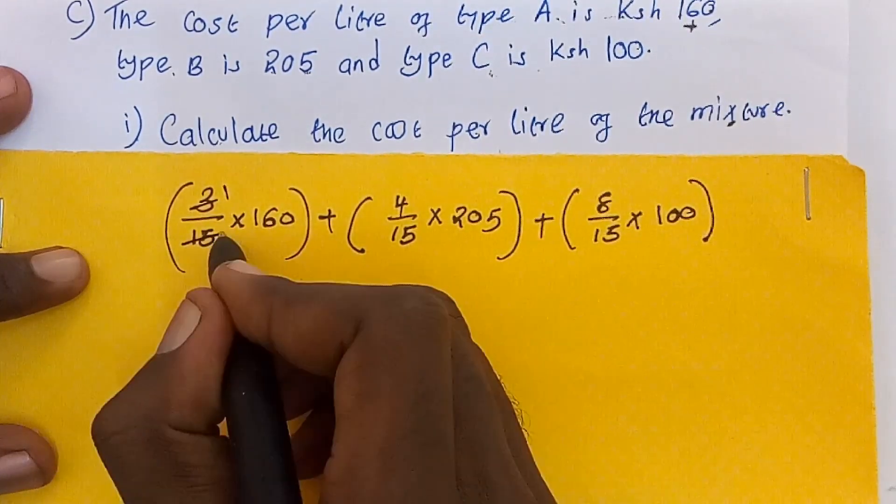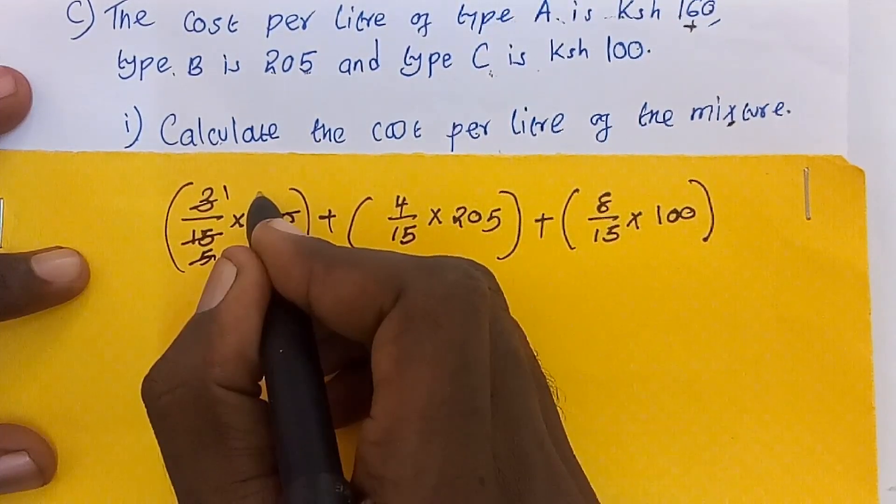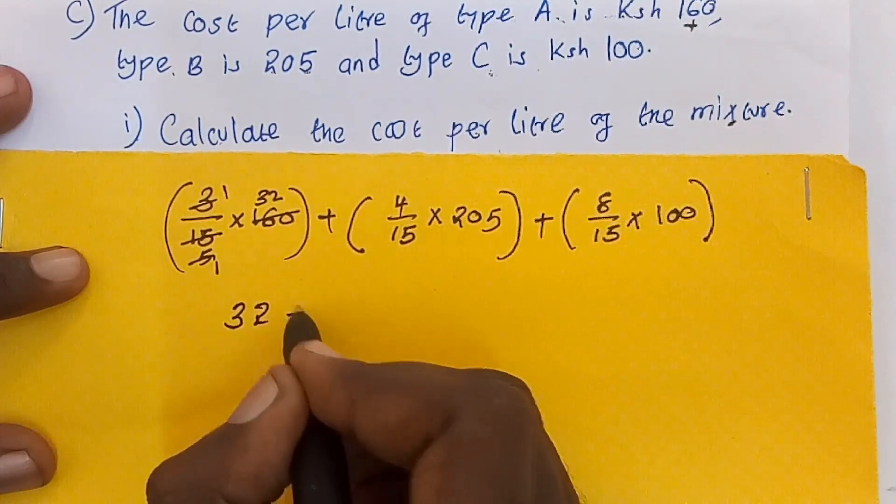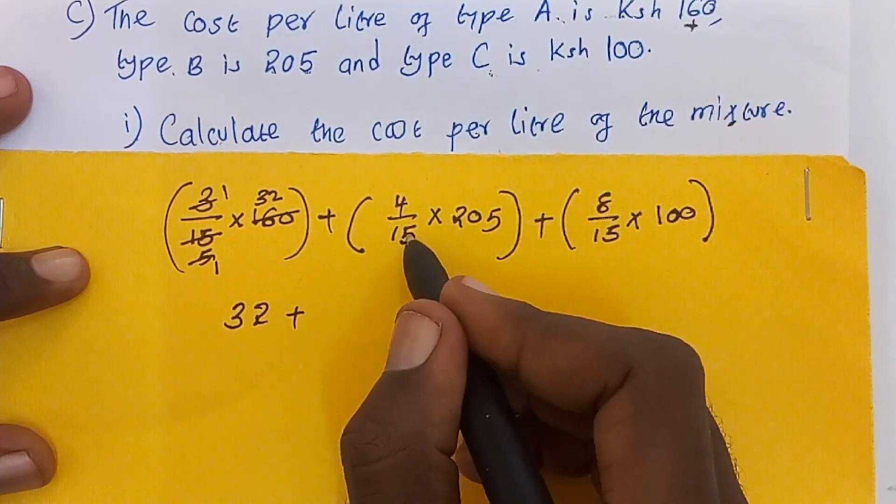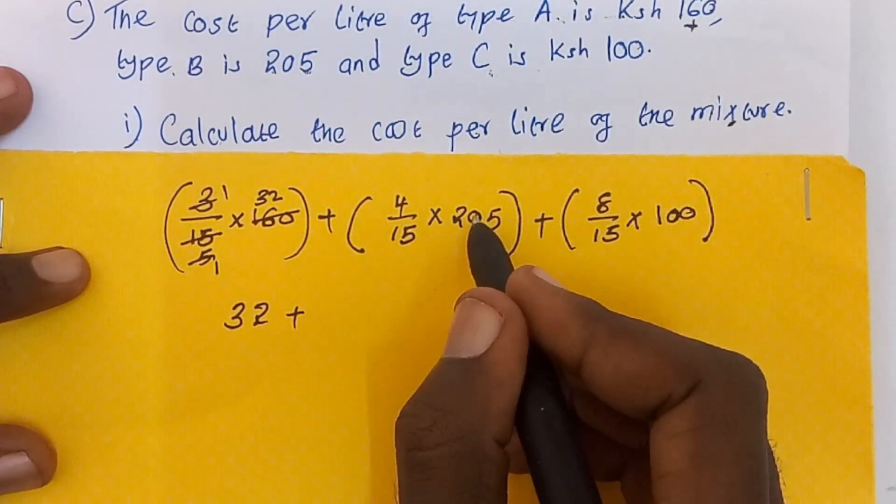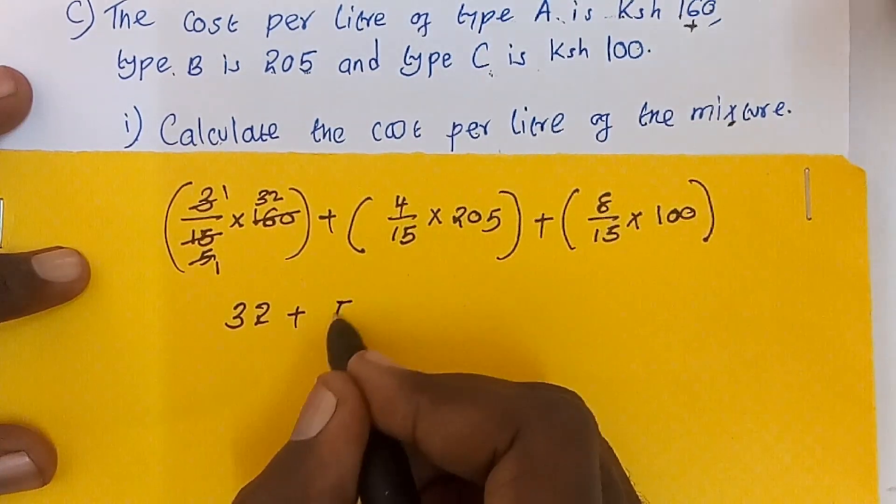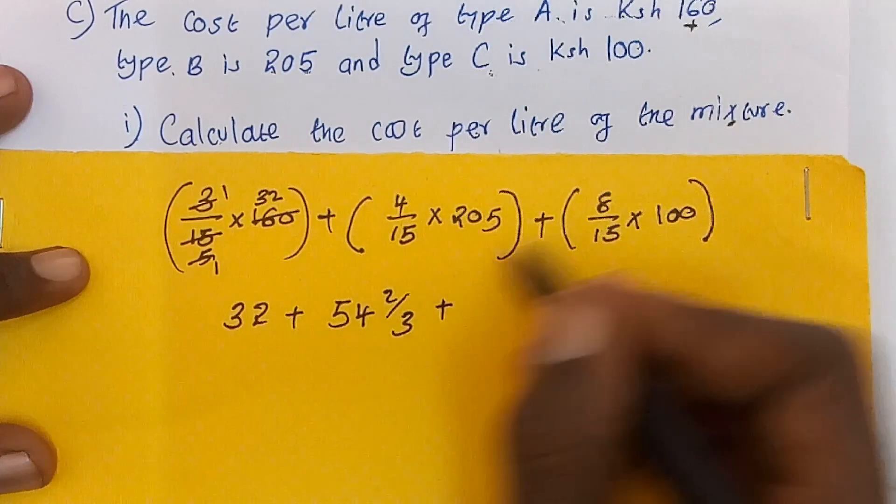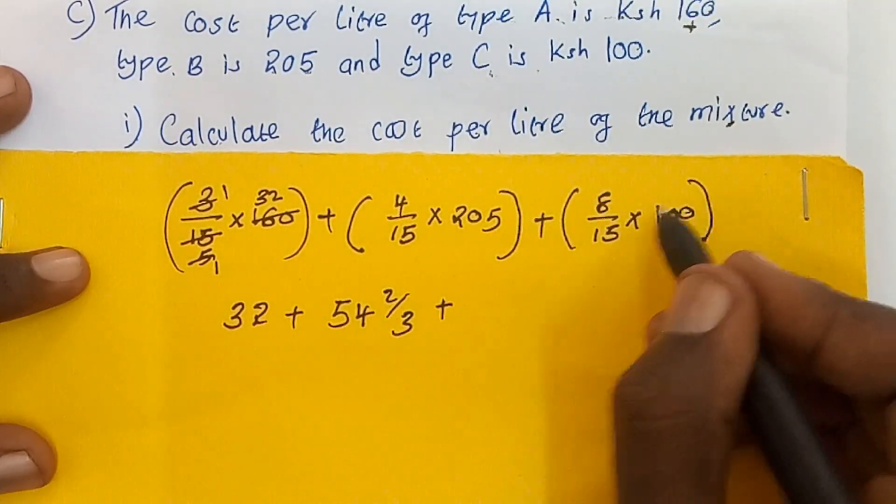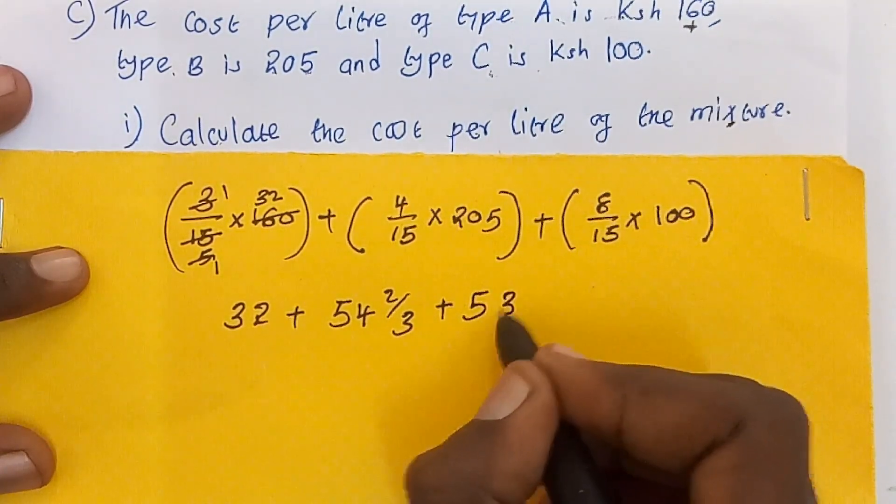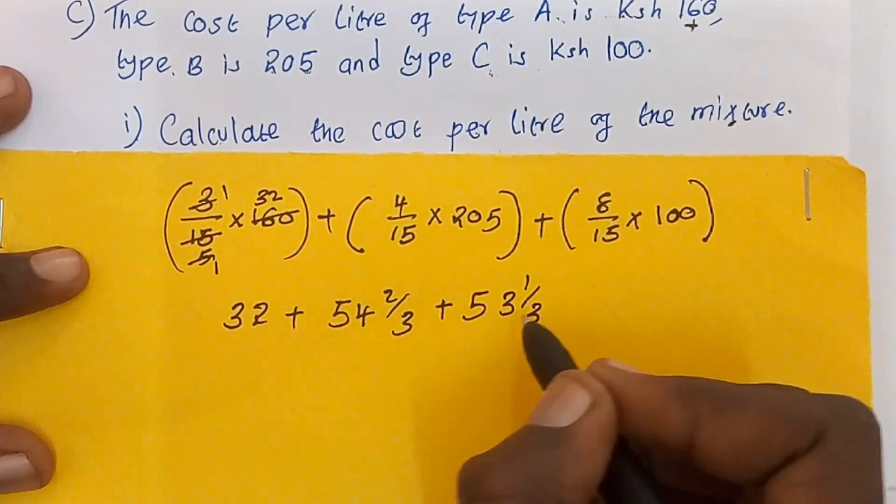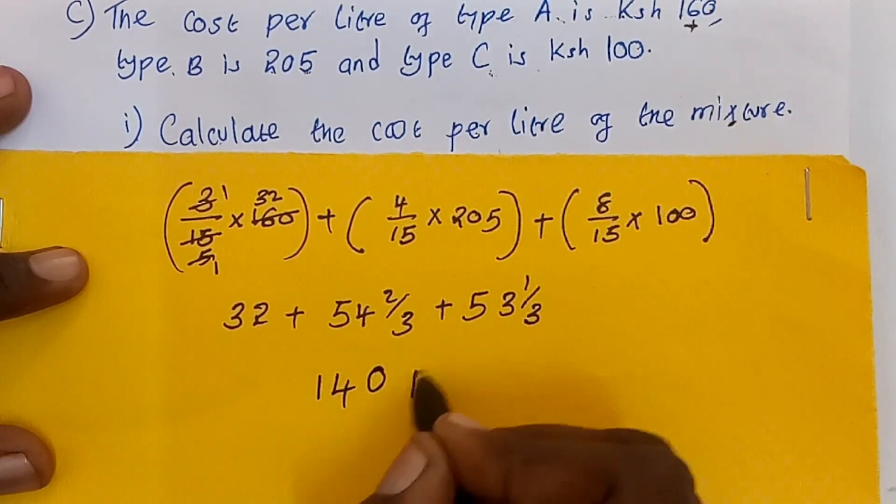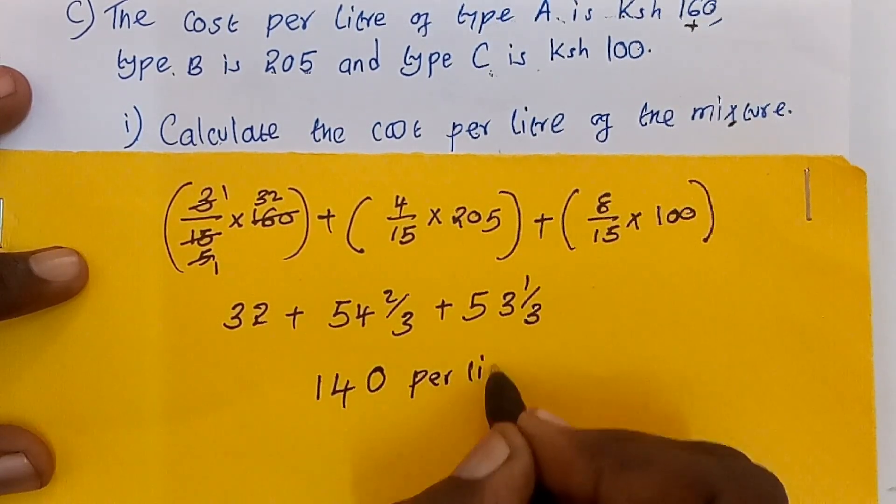3 out of 15, by 3, 1, by 3, 5, by 5, 1, by 5, equals 32. This one now is 32, plus 4 out of 15 times 205, we get 54 whole number 2 out of 3, plus if we multiply 8 out of 15 times 100, we get 53 whole number 1 out of 3, and in total if we add, we get 140 per liter.